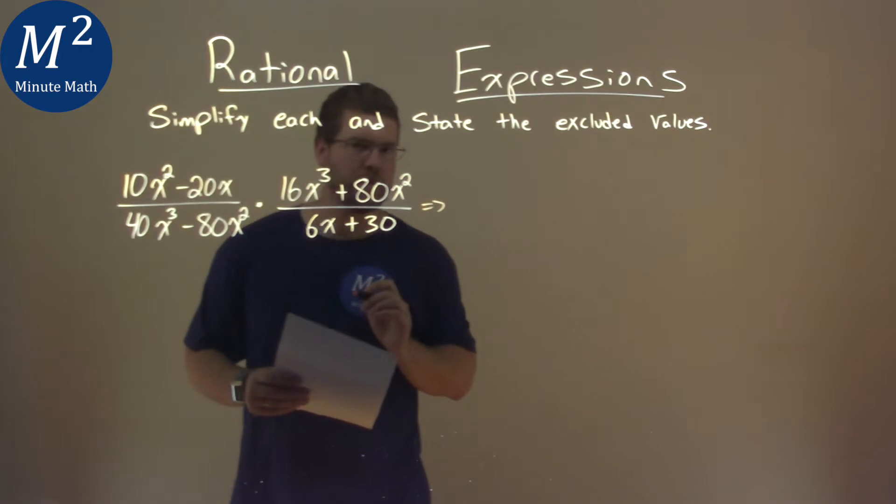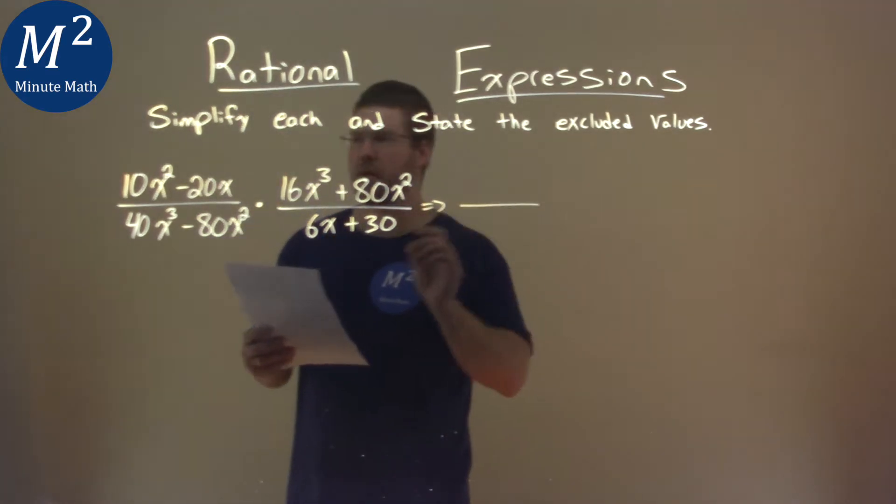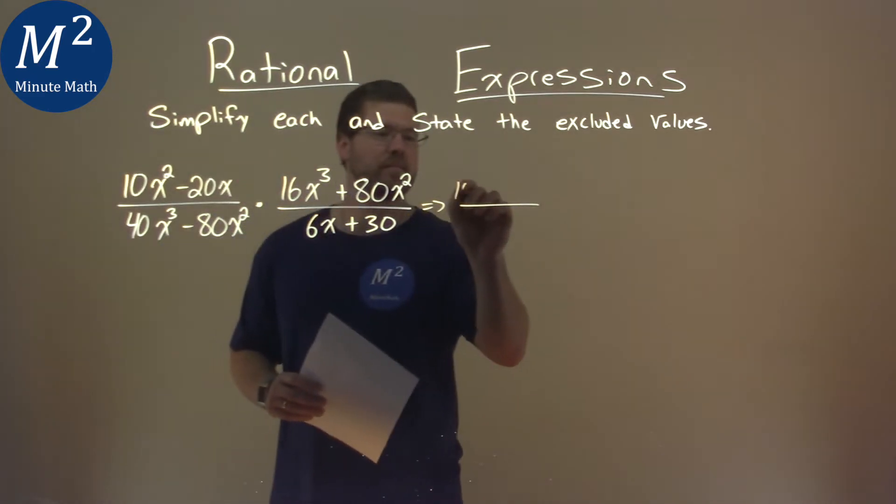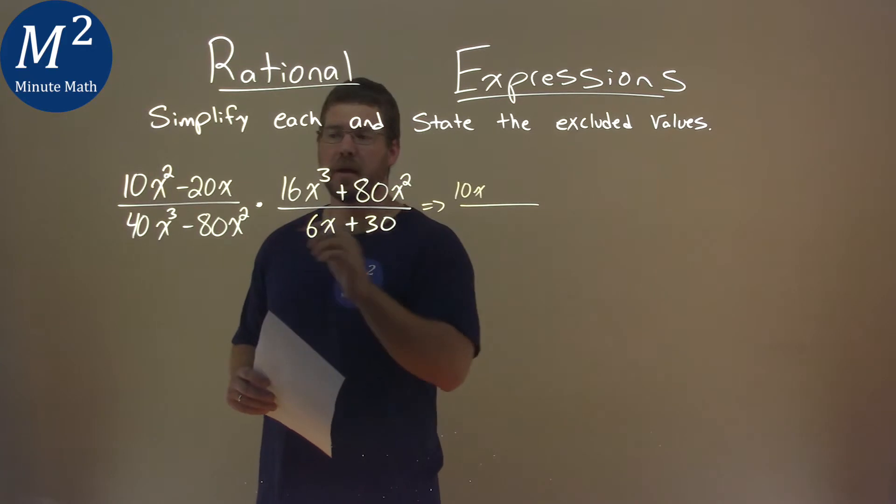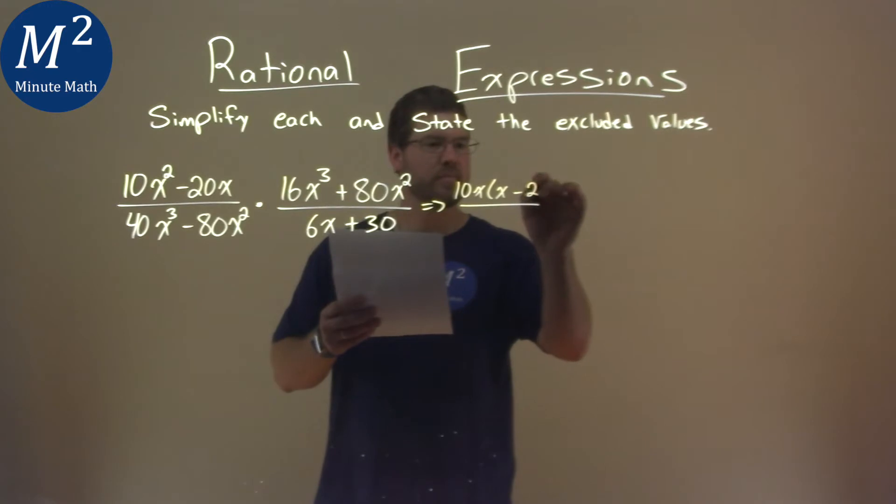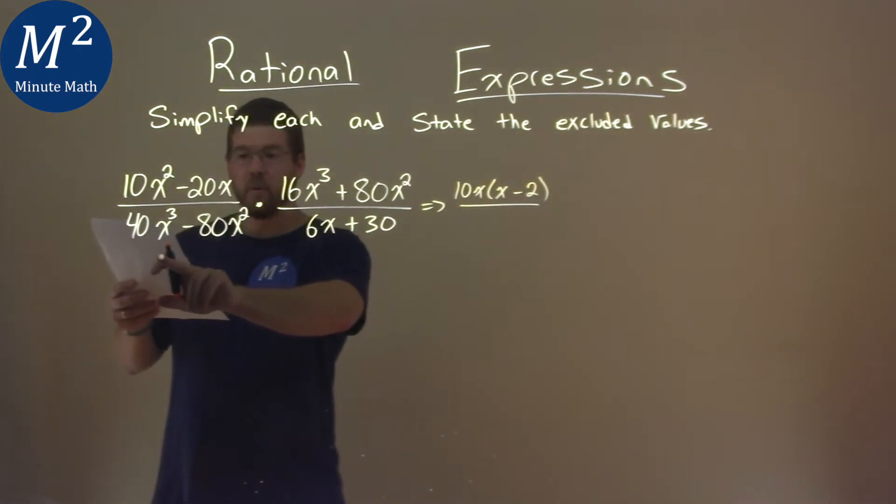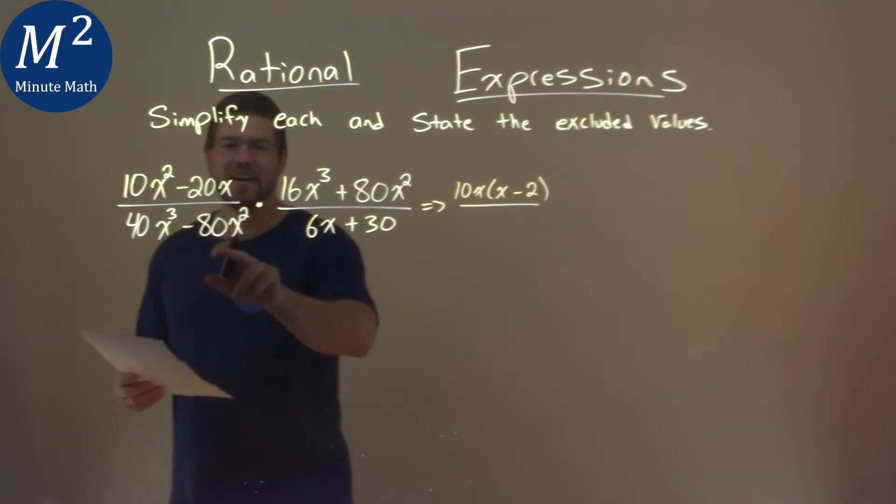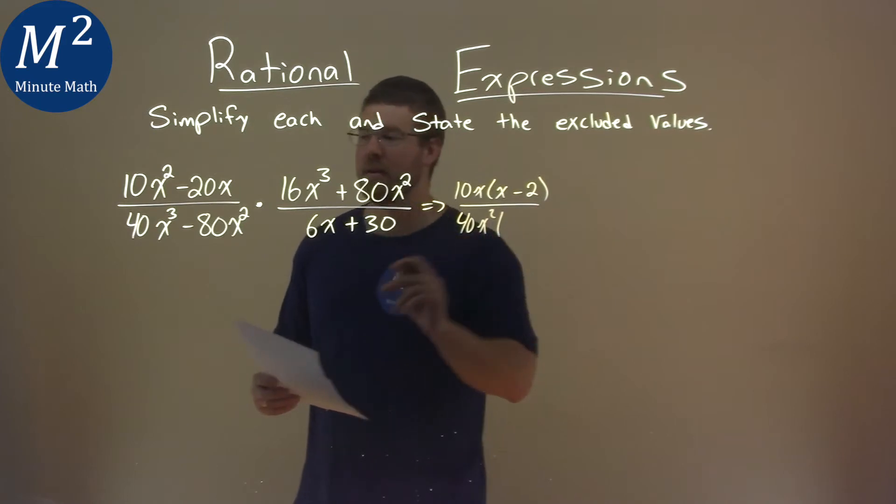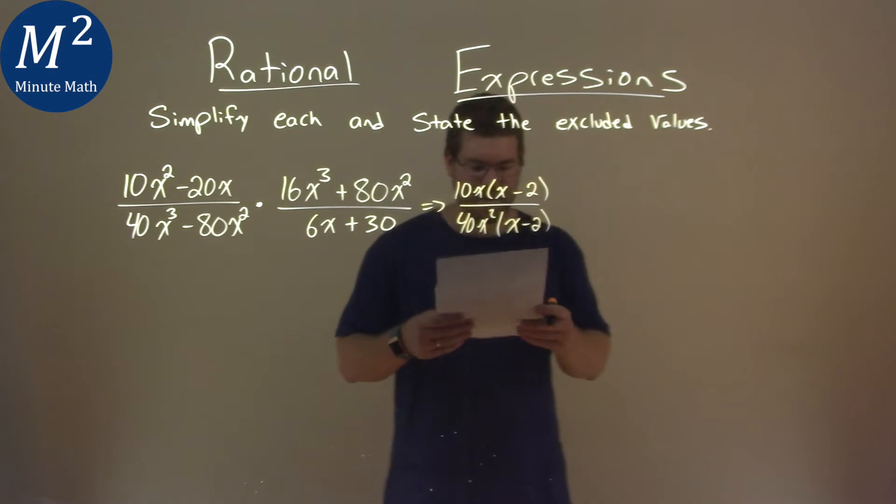So let's go simplify first, and I'm gonna try to factor where I can. This first part up here, what can I pull out? Well, I can pull out a 10x right there. If I pull out a 10x, I'm left with an x minus 2. Denominator again here, I can pull out a 40x squared. If I pull out a 40x squared here, I'm left with an x minus 2 again. Not too bad, not too bad.